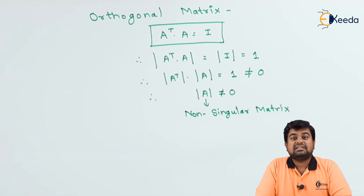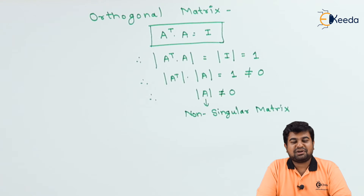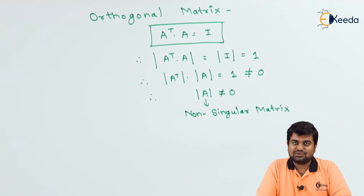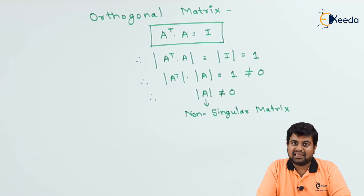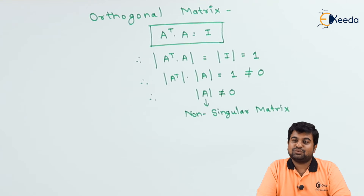For all singular matrices — where the determinant value of A equals zero — these matrices cannot be called orthogonal matrices, because the condition A-transpose into A equals I will never be satisfied.